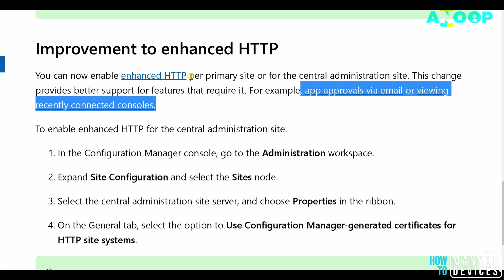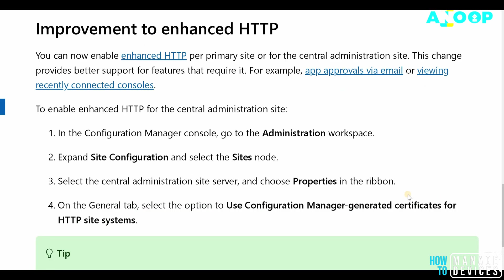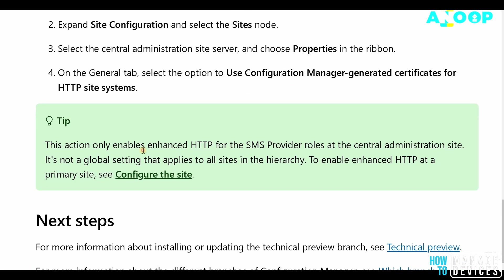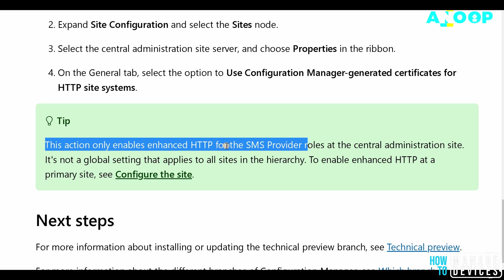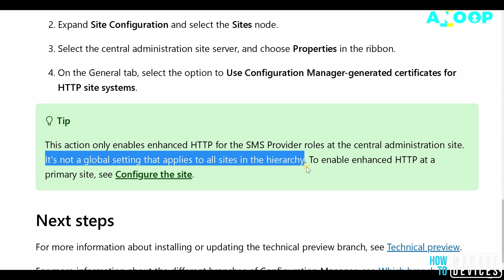Another important feature of Enhanced HTTP mentioned in the documentation is that it is configurable per primary site. You can enable Enhanced HTTP only for some particular primary servers in a hierarchy scenario. A very useful tip is that the action only enables Enhanced HTTP for the SMS Provider roles at the Central Administration Site (CAS) — it's not a global setting that applies to all primary sites in your hierarchy.